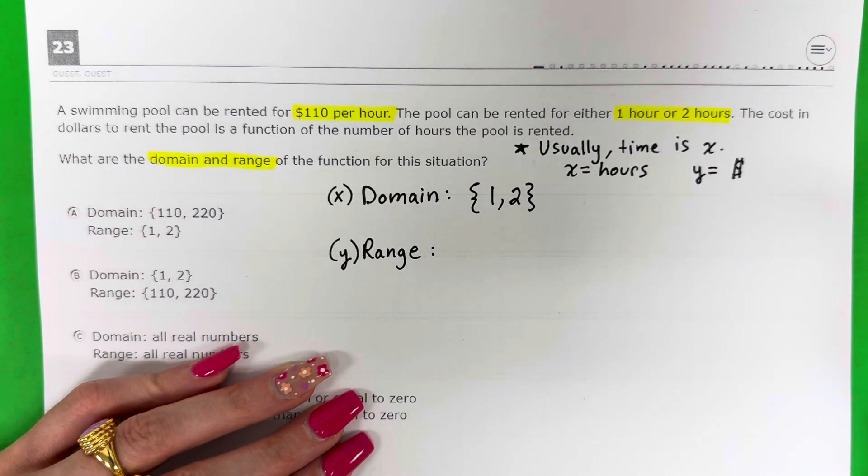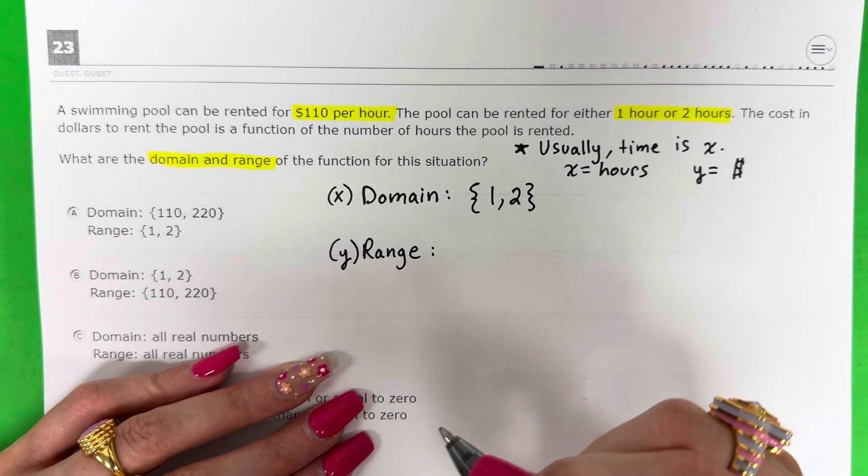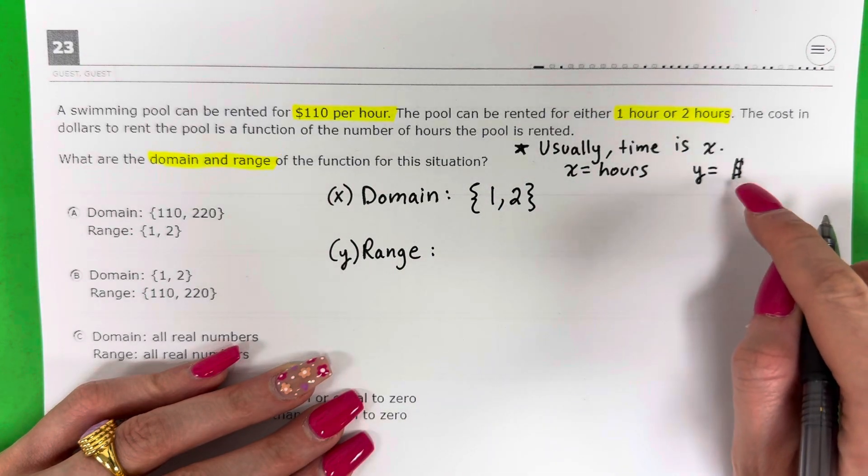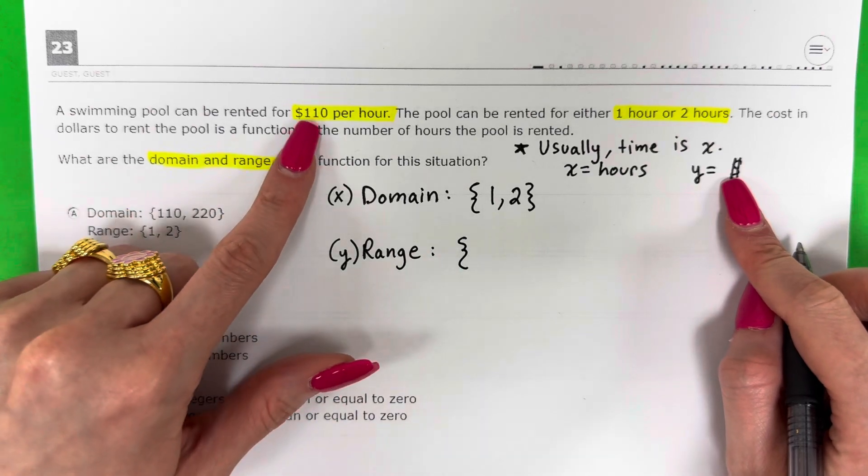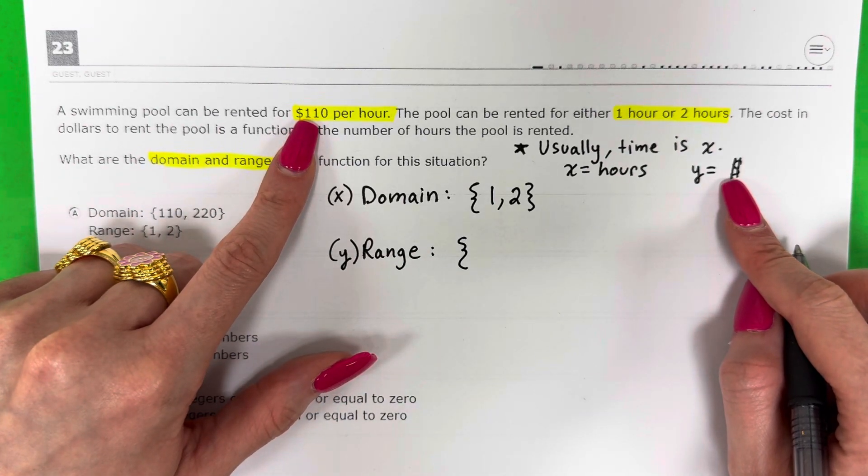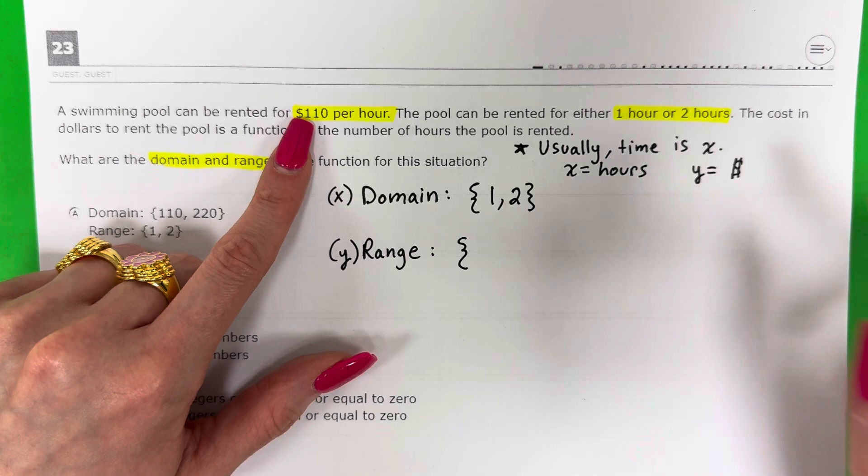Now my range is my y. It's how much money I'm paying for 1 hour and 2 hours. It's $110 per hour. So for 1 hour, how much money? $110.